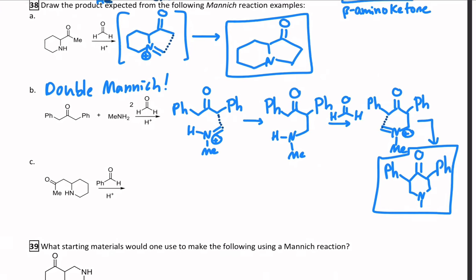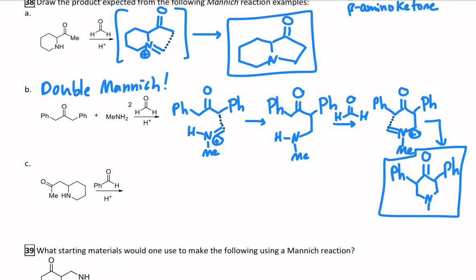So I'll leave those two right there in front of you. I'd like you to hit pause and see if you can figure out what the product would be of the third one. There's the aldehyde, there's the amine, and there's the ketone. What would it look like after you do a Mannich from that?